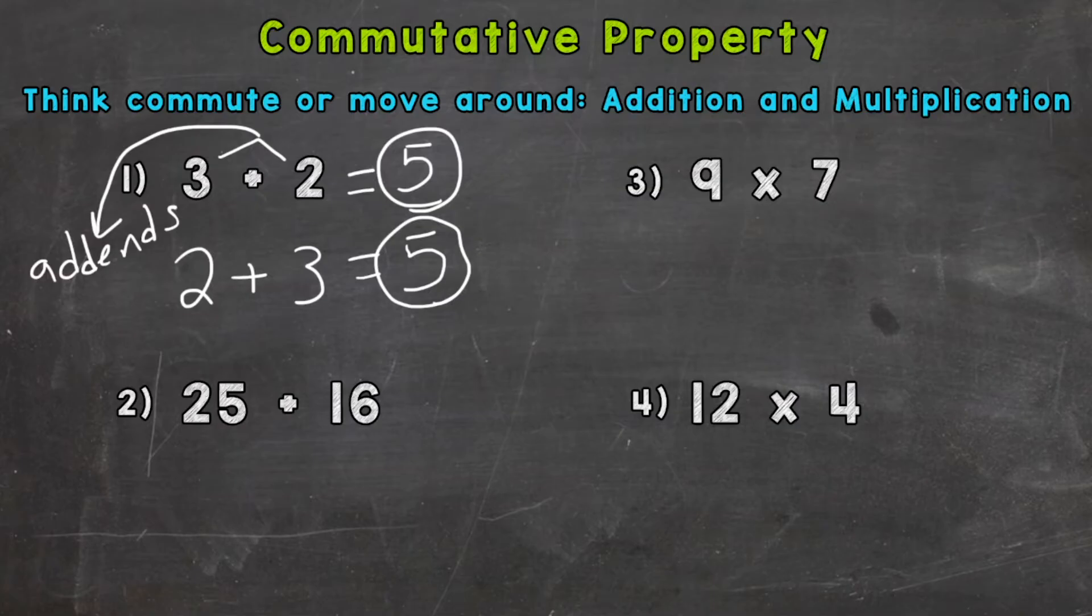Let's take a look at number two and make sure this works for another addition problem. 25 + 16 gives us a sum of 41. Let's move or commute the addends and switch around the 16 and 25.